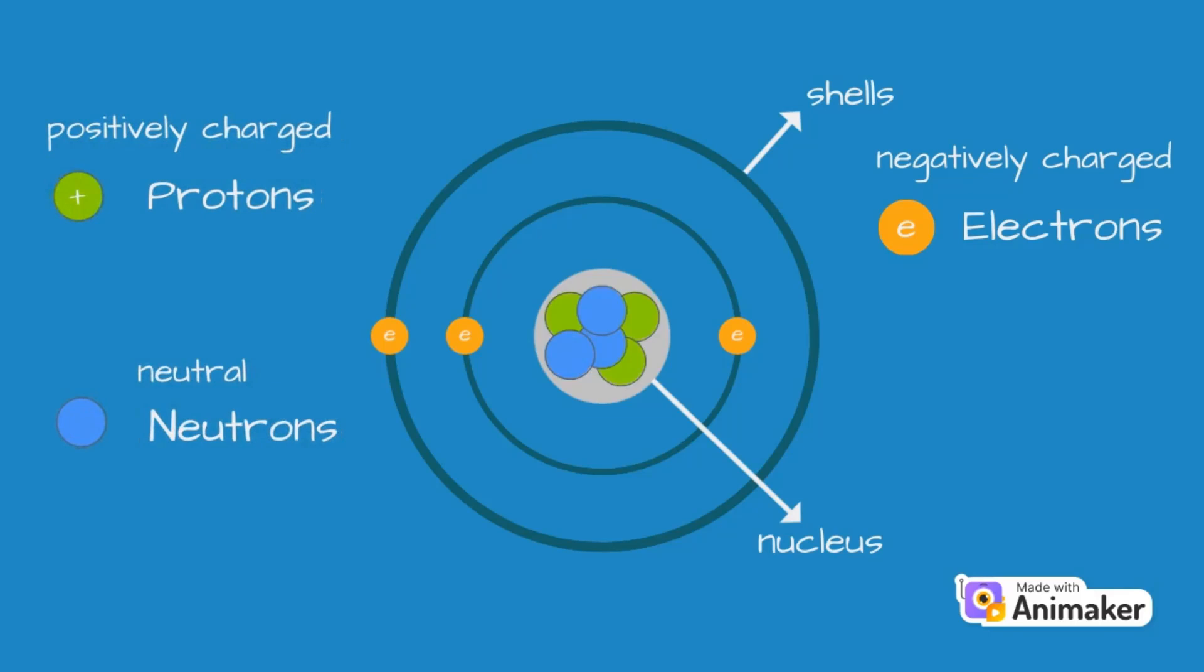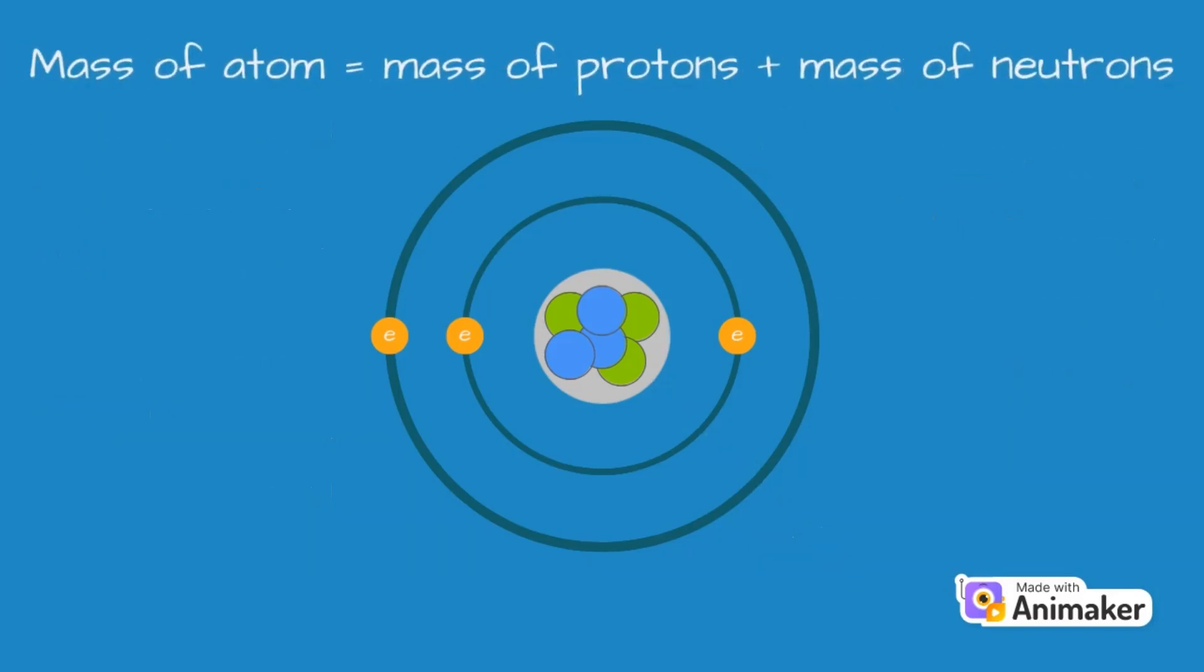Protons and neutrons have the same mass, so we say that they have a relative mass of 1. Electrons have a mass approximately 2000 times smaller than a proton, so it's negligible and can be considered zero. Hence, the mass of an atom is the sum of the masses of the protons and the neutrons.